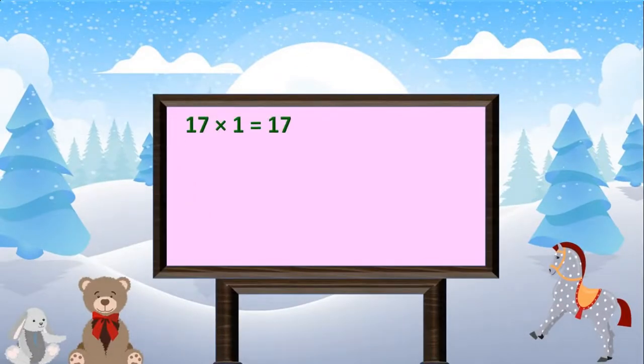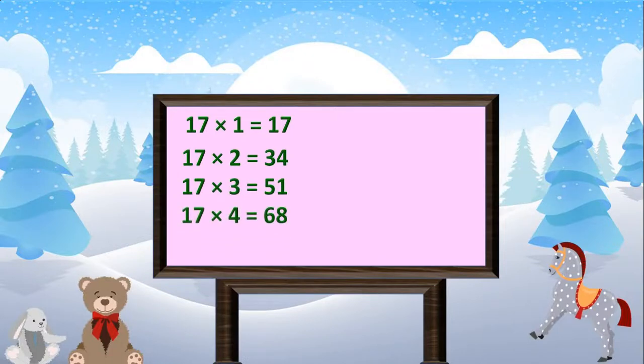17 1s are 17, 17 2s are 34, 17 3s are 51, 17 4s are 68, 17 5s are 85.